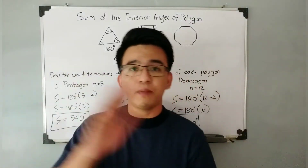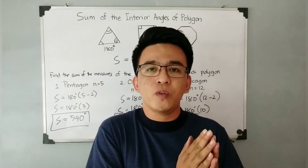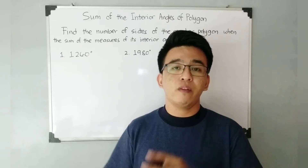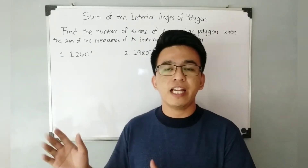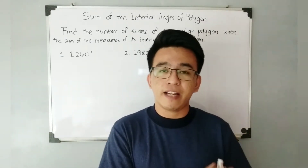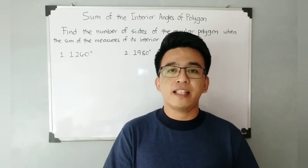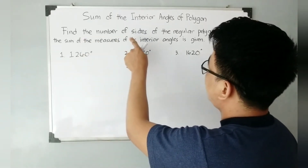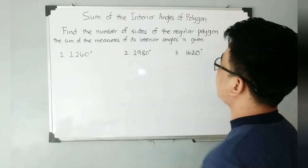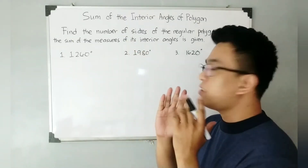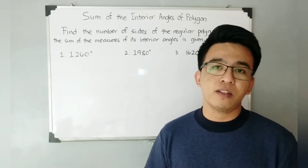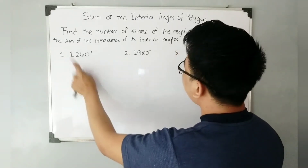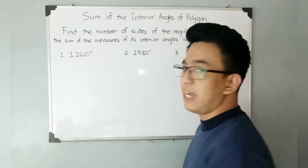In the next part of our video, we will reverse the process. I will give you the sum of the interior angles and we will try to figure out how many sides the polygon has. Previously, given the number of sides of a regular polygon, we calculated the sum of the interior angles. This time, given the sum of the interior angles, we will find the number of sides. Let's start with number 1: the sum of the interior angles is equal to 1,260 degrees.